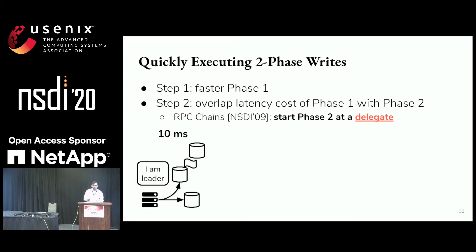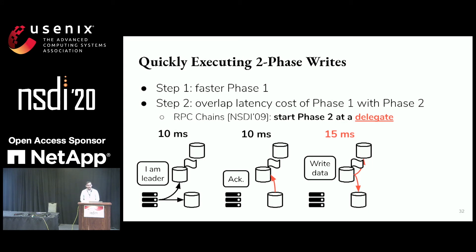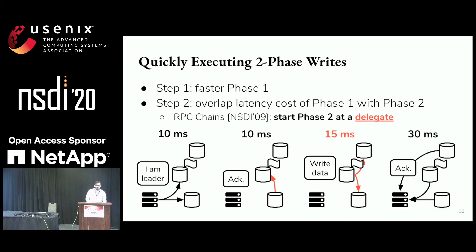The web server starts just as before, declaring itself leader to the data sites. When acknowledgments are sent out, rather than going to the web server, they go to the delegate — highlighted with a flag. The delegate then initiates the write by broadcasting the actual data, and finally acknowledgments come back to the web server. Combined, these two optimizations take write latency down to 65 milliseconds, less than 10% overhead compared to a one-round write protocol.